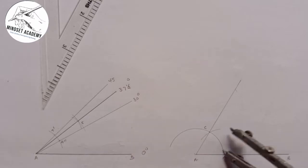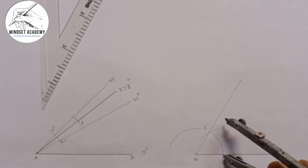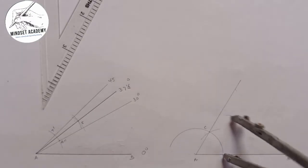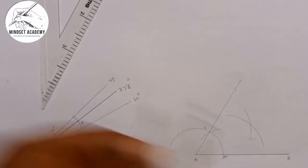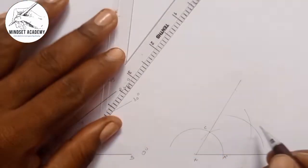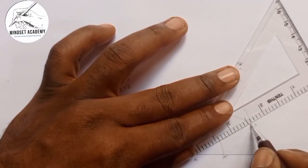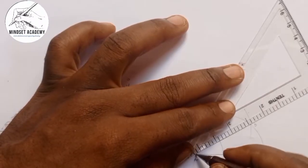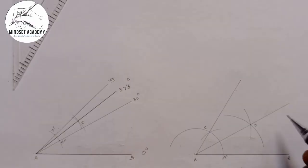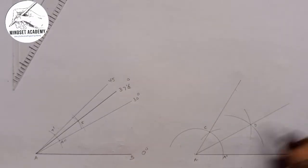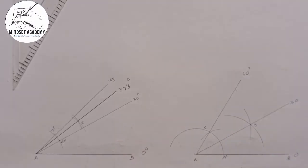But I actually need 30, so I bisect 60. I place my compass at A prime at any given radius and draw an arc; then place it at point C and draw another arc. Where they meet I call point D. I draw a line from A through D. The angle between the baseline (zero degrees) and that line is 30 degrees, because I bisected 60 degrees.